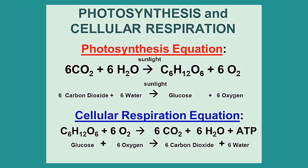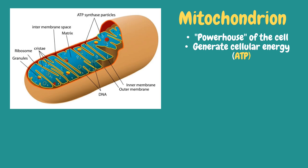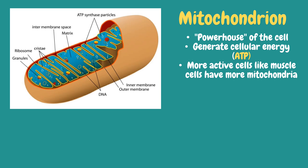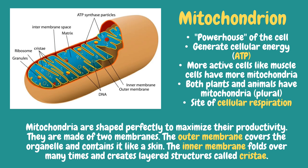In plants, the organelle that performs photosynthesis is the chloroplast. But how about in cellular respiration? Mitochondrion is the powerhouse of the cell. It generates cellular energy, which is ATP or adenosine triphosphate. More active cells like muscle cells have more mitochondria, and both plants and animals have it. It is also the site of cellular respiration. Mitochondria are shaped to maximize productivity, made of two membranes: the outer membrane, which covers the organelle like a skin, and the inner membrane, which folds many times creating layered structures called cristae.